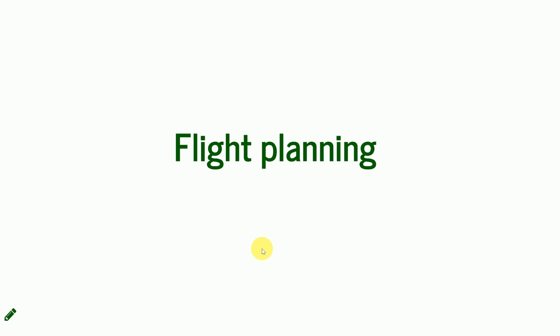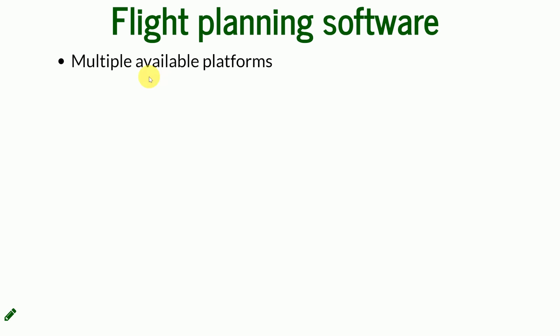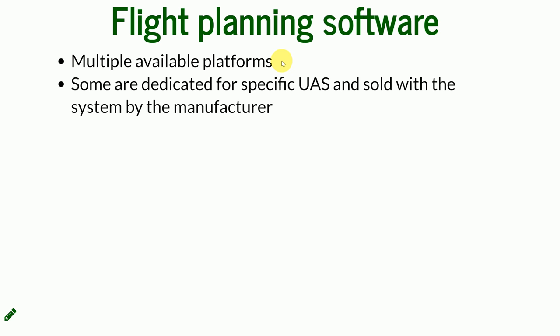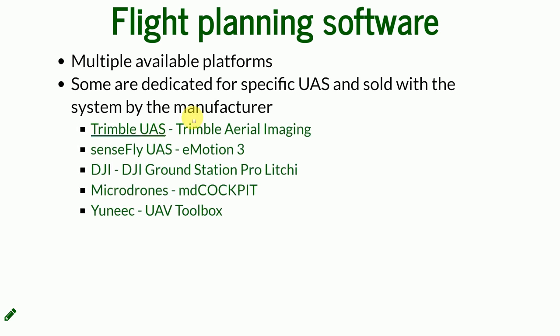Now we move into flight planning. First you have to choose the software. We are limited because the UX5 fixed-wing can only work with one kind of software. Trimble develops the UAS and also develops the software it cooperates with. If you use a different platform, there are also different software platforms that can work with your UAS. Some are specific to the UAS, like Trimble.